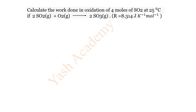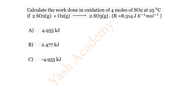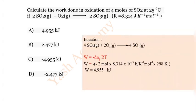Question 19: Calculate the work done in oxidation of 4 moles of SO₂ at 25°C, given: 2SO₂(g) + O₂(g) → 2SO₃(g). Options: A) 4.955 kJ, B) 2.477 kJ, C) −4.955 kJ, D) −2.477 kJ. The correct answer is A) 4.955 kJ.